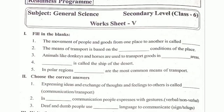Hello children, today we are going to discuss General Science, secondary level, Worksheet 5 — filling the blanks. The movement of people and goods from one place to another place is called transport. The means of transport is based on dash conditions of the place.